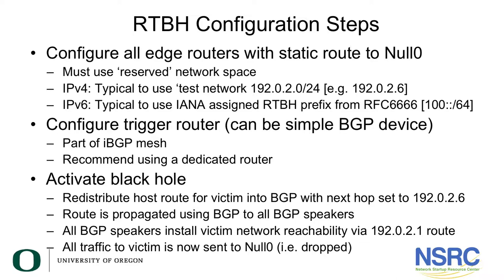Reserved address space means it should not be seen in the global internet, and both for IPv4 and IPv6 there are a number of these defined. For remotely triggered black hole filtering, it is very common to use for IPv4 the test network, which is the 192.0.2.0/24 prefix. For IPv6, there is an IANA-assigned prefix from RFC 6666, which is the network 100::1/64.